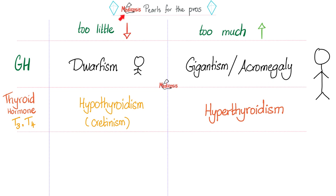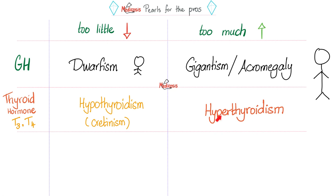Too little thyroid hormone means hypothyroidism. Congenital hypothyroidism was formerly known as cretinism. Since thyroid hormone is important for metabolism and brain development, these babies are born with low IQ, poor brain development, intellectual disability, and developmental delay. On the other hand, too much thyroid hormone means your body is working like crazy — the stove is on fire. Too much metabolism, diarrhea, weight loss, elevated heart rate, etc.